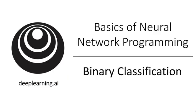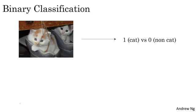Logistic regression is an algorithm for binary classification. So let's start by setting up the problem. Here's an example of a binary classification problem. You might have an input of an image like that, and want to output a label to recognize this image as being either a cat, in which case you output one, or non-cat, in which case you output zero. And we're going to use y to denote the output label.